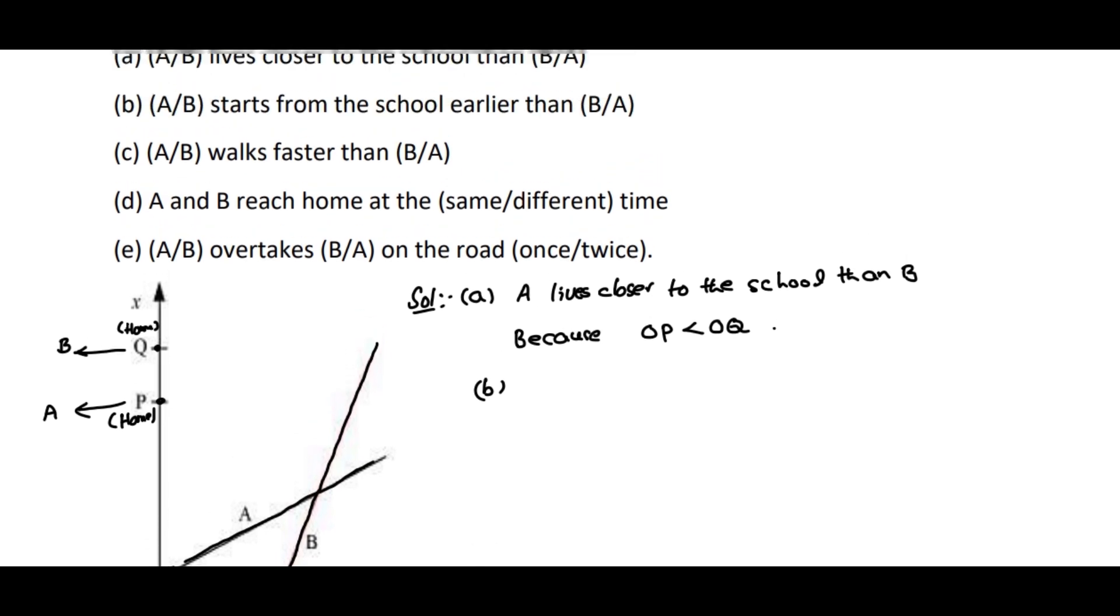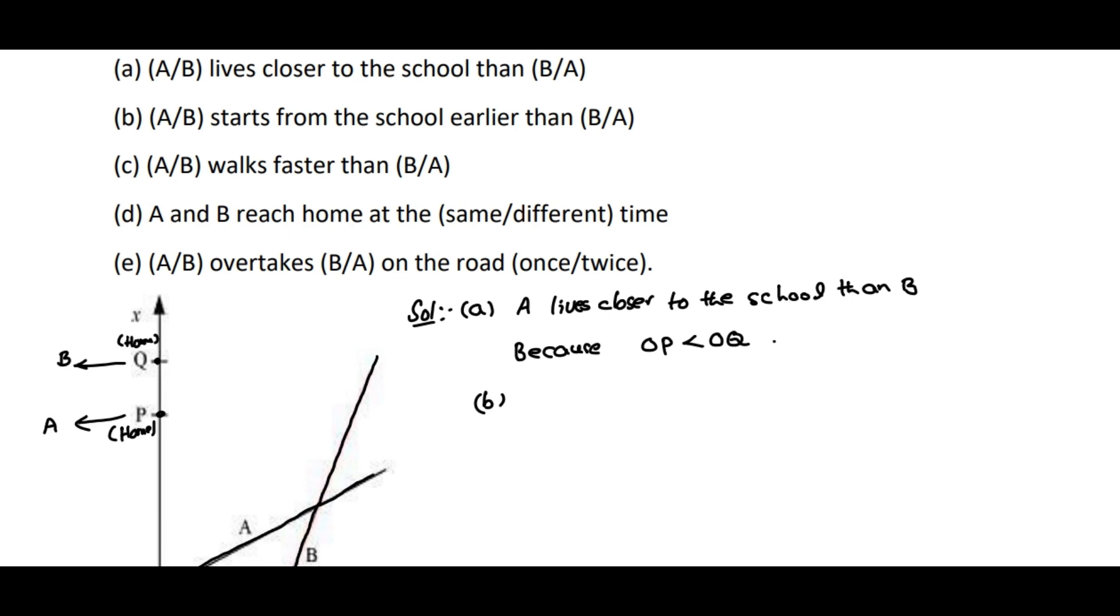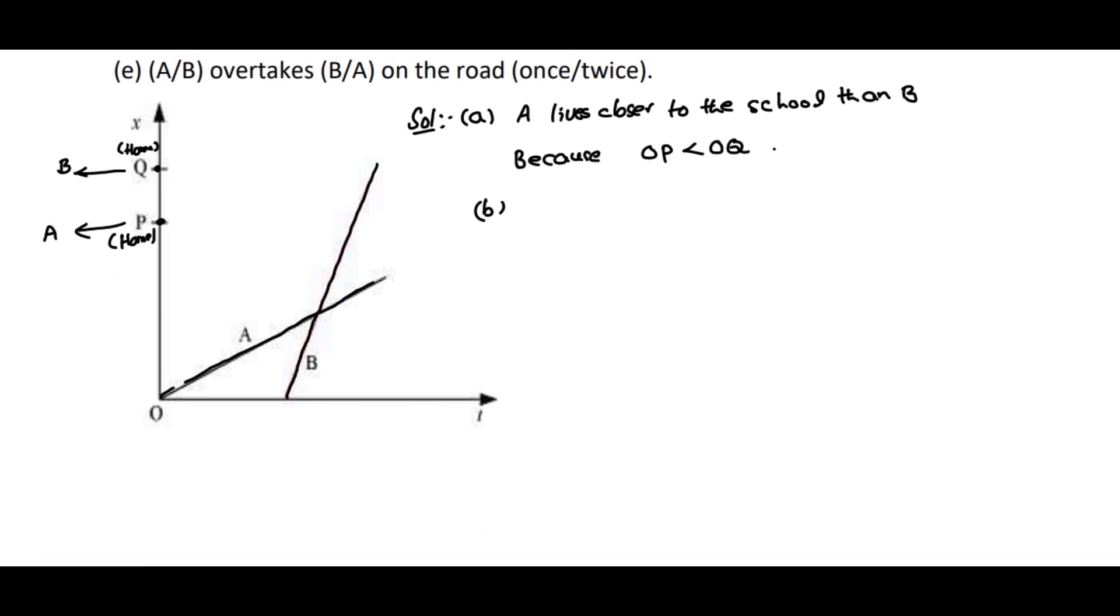Coming to B: A or B starts from the school earlier than B or A. That means, who started from the school earlier? If you observe clearly, when time t equals 0, student A started from the school, but after some time B started. So we can write the answer: A starts from the school earlier than B, because A starts at time t equals 0, but B starts at time t equals some value.